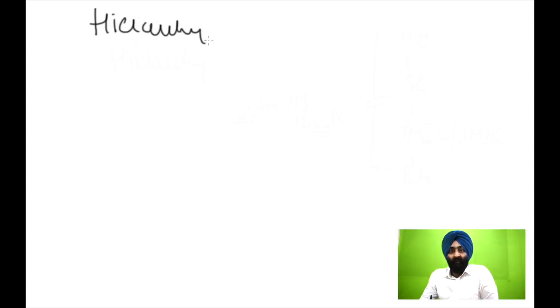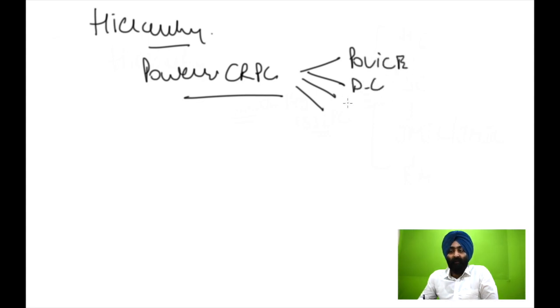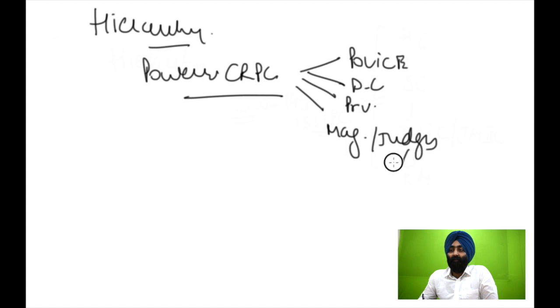In this video, I will be covering the concept of Hierarchy of Courts in India. This is a very important part as far as the Criminal Procedure Code is concerned. Regarding the hierarchy, I will also be discussing the powers of different authorities under the Criminal Procedure Code — important authorities like Police, Defence Council, Private Pleaders, and the very important role played by the Magistrate or Judges of the Higher Court. So this is the main focus of this video.